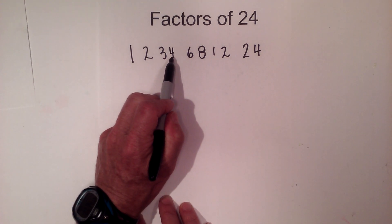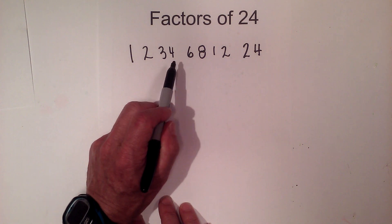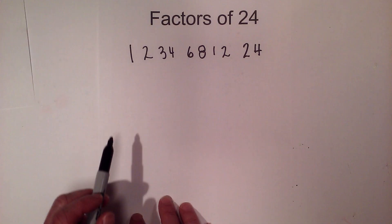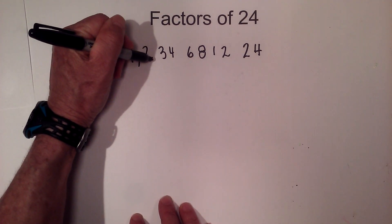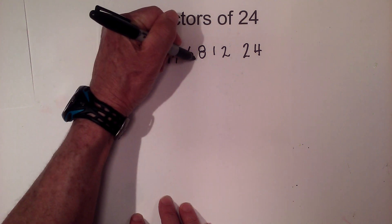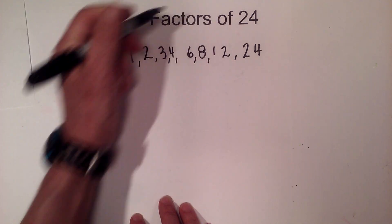So I'm done. All I have to do is find the number between 4 and 6, and that is 5, and 5 does not go into 24. So here are the factors of 24: 1, 2, 3, 4, 6, 8, 12, and 24.